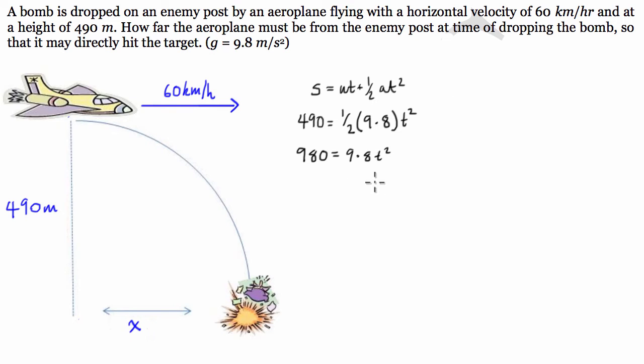And once we divide both sides by 9.8, we have 980/9.8 = t². So we square root both sides. This here is obviously 100, so t = 10 seconds.